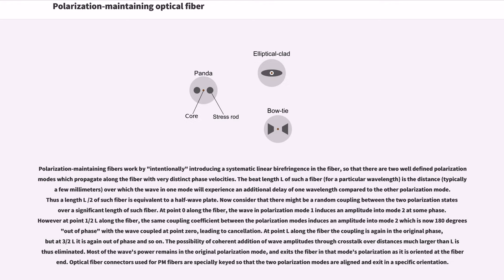Polarization maintaining fibers work by intentionally introducing a systematic linear birefringence in the fiber, so that there are two well-defined polarization modes which propagate along the fiber with very distinct phase velocities. The beat length L of such a fiber is the distance over which the wave in one mode will experience an additional delay of one wavelength compared to the other polarization mode.